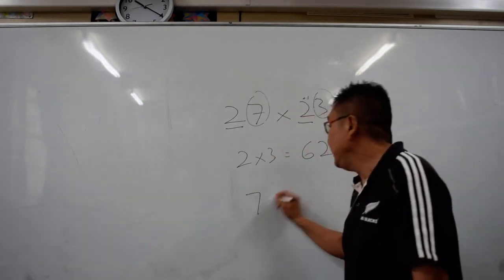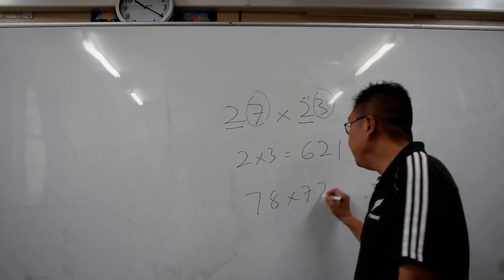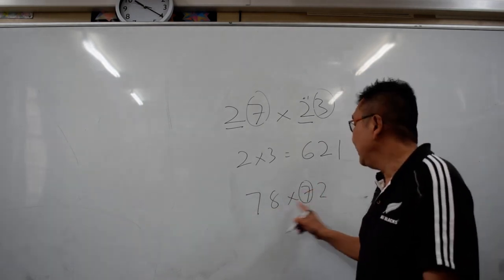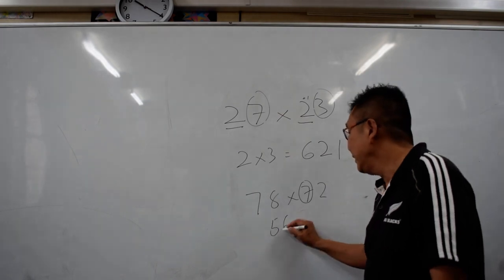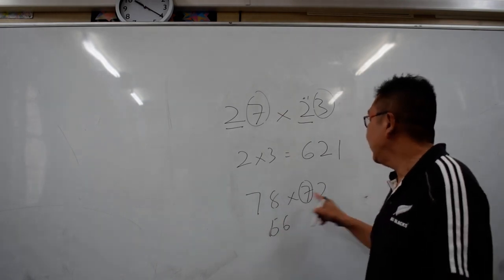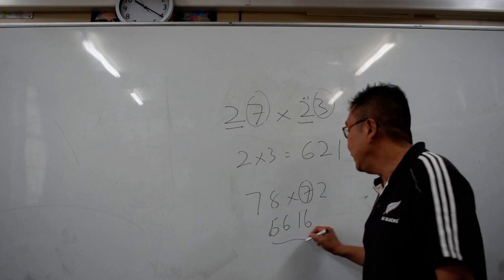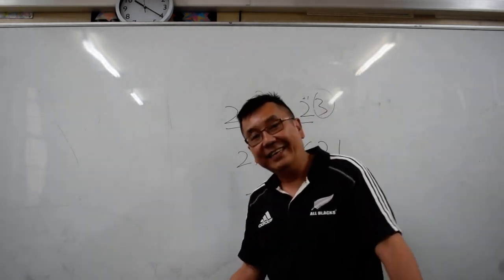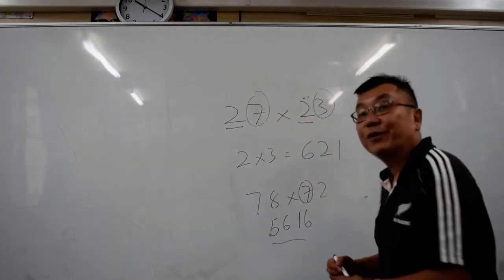We do a harder example. 78 times 72. So what you do, you increase this number by 1. So 7 times 8 is 56. And then 8 times 2 is 16. So the answer is 5,616. Well done.